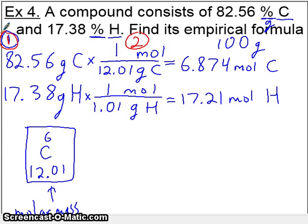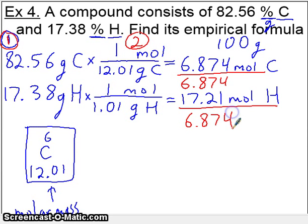Step three says divide by small. What you do is you divide both of these numbers by the smallest one. If you had three numbers, you divide all three by the smallest one. This becomes 6.874 divided by 6.874. This makes the smaller one into a one, so when you divide these two numbers together, you'll get one mole of carbon. Then it makes the other one a ratio in terms of that one. When you divide 17.21 by 6.874, you'll get 2.5 moles of hydrogen.